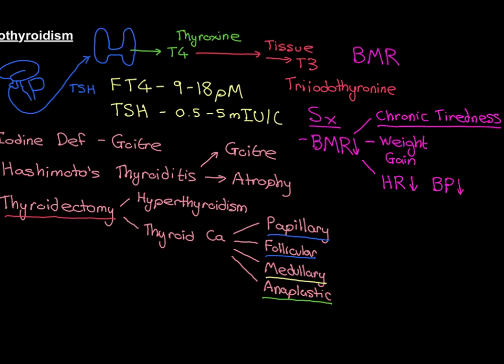Commonly, people with hypothyroidism may have a low heart rate — they might be bradycardic — and their blood pressure might be lower than usual as well. Another common symptom is that it can make people feel quite low in mood, a little bit depressed. Other things to be aware of are the effects on the gut. If basal metabolic rate in the gut goes down, the gut moves around less and has more of a problem moving contents through it. Therefore, people can end up constipated.